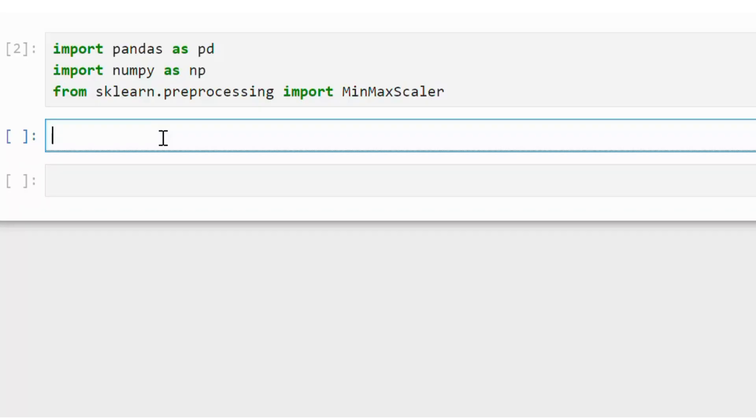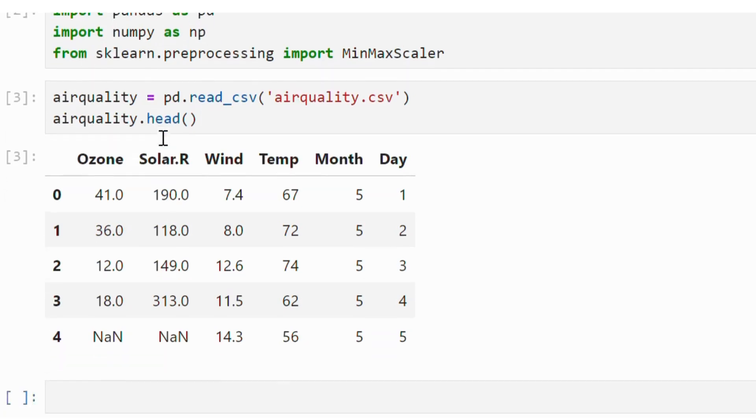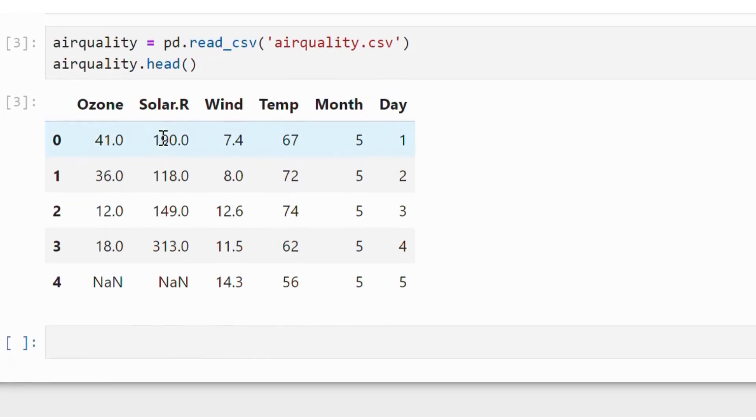Now let's see how we can normalize the data in Python. We will use the air quality dataset which has different attributes on various scales.